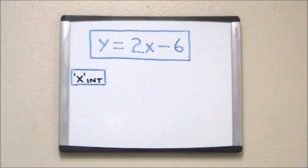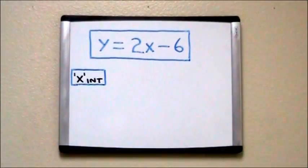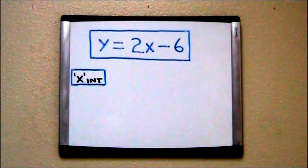On the board is an equation in slope-intercept form, y equals 2x minus 6.